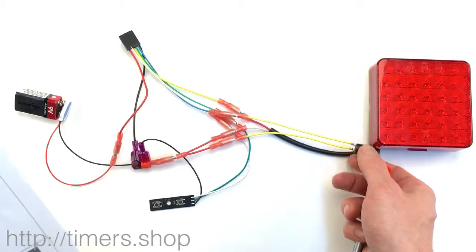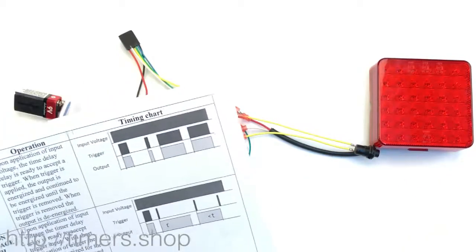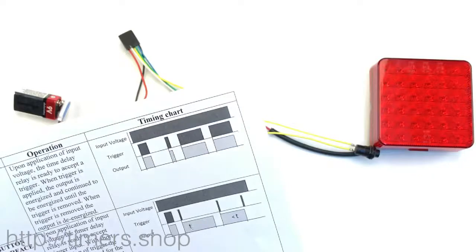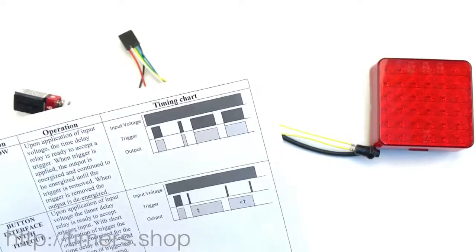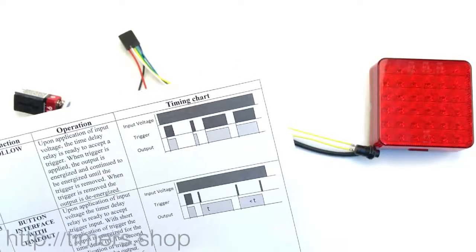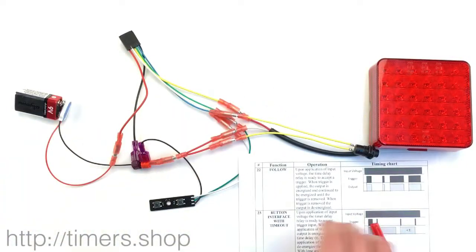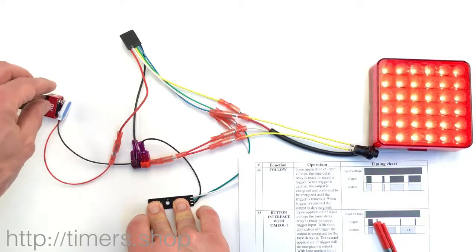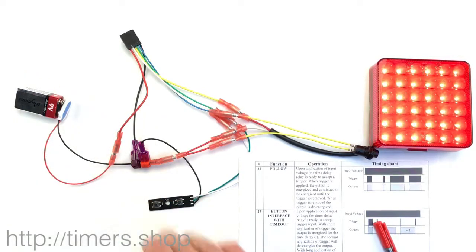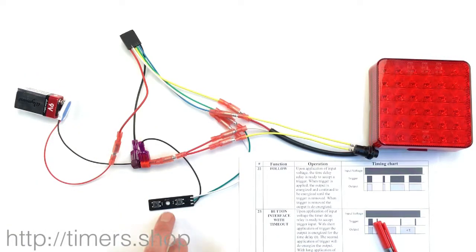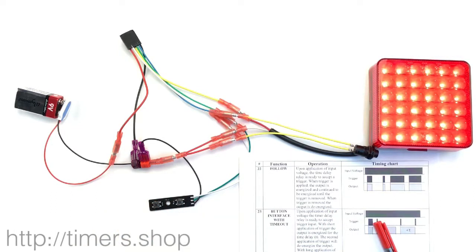When the connection to ground is active, that will be trigger 4. If it's a positive signal, it will be trigger number 2. Let's configure it to function 22. For timing, we don't need to set any timing because there's no timing here, it just follows.